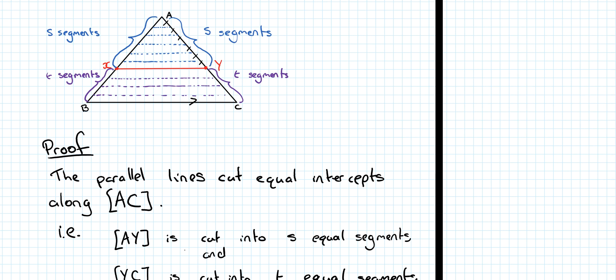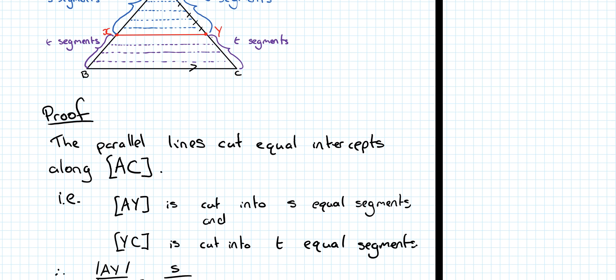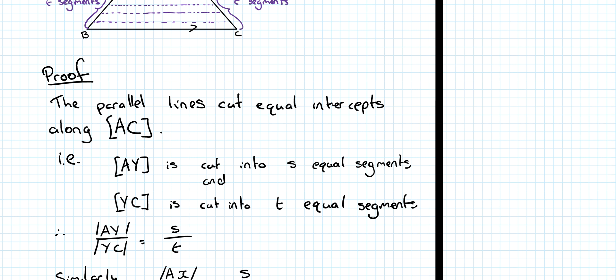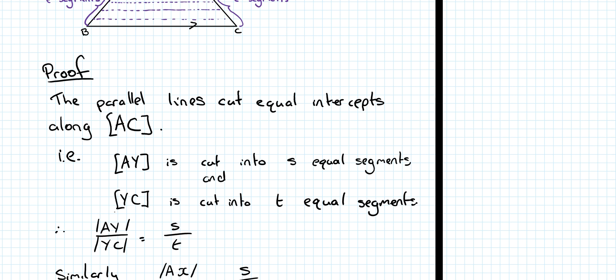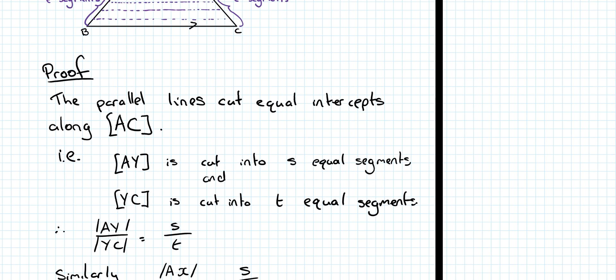The parallel lines cut equal intercepts along AC. That is, AY is cut into S equal parts. Yes, I acknowledge the fact it's six here, but in general, it could be any number S. And that YC is cut into T equal parts. And again, it was four here. That means, then, that the ratio of AY to YC, this section over this section, is split S is to T. So, AY over YC is S to T.